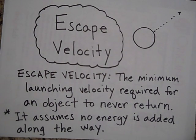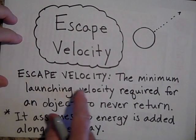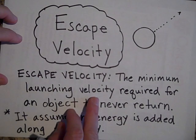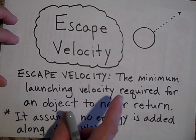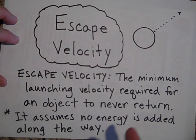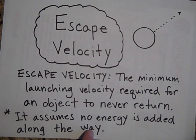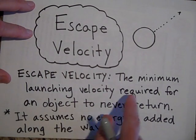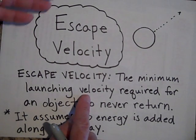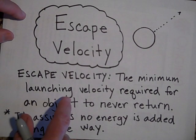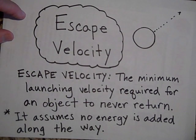I want to tell you about escape velocity. Let's define it as the minimum launching velocity required for an object to never return once it's launched. So you're going to shoot something off the Earth or any other planet, and it's going to take off and won't ever come back. It's the minimum speed for this to occur — you can go faster than escape velocity and it for sure won't come back, but what is that minimum speed necessary?